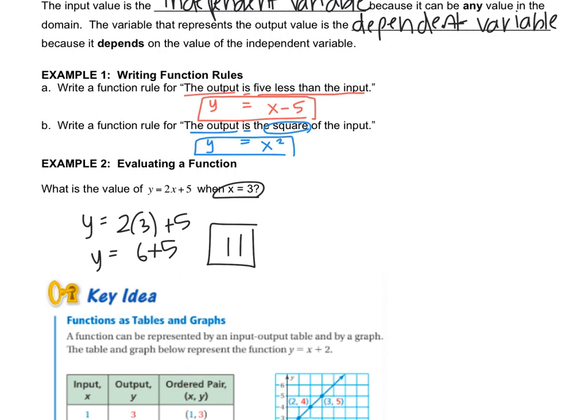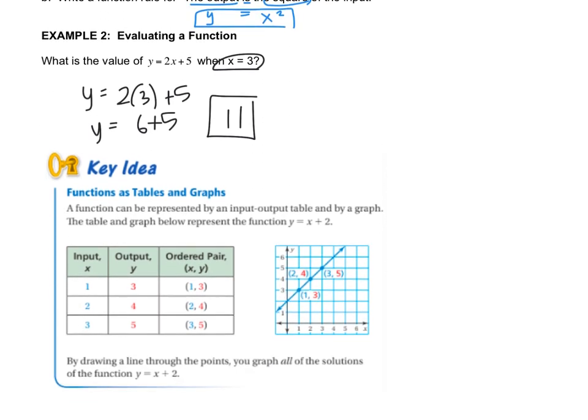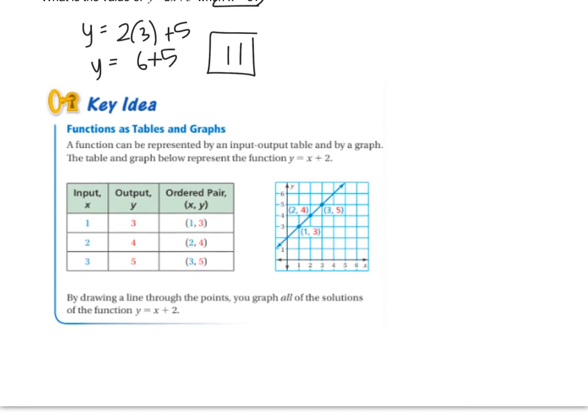Now we're going to look at something from chapter four, the graphing chapter - using a table to make a graph. The only difference is that instead of calling it a graph, we're calling it a function. Remember, an ordered pair is written in the form X comma Y. We're going to find ordered pairs and create this function graph.